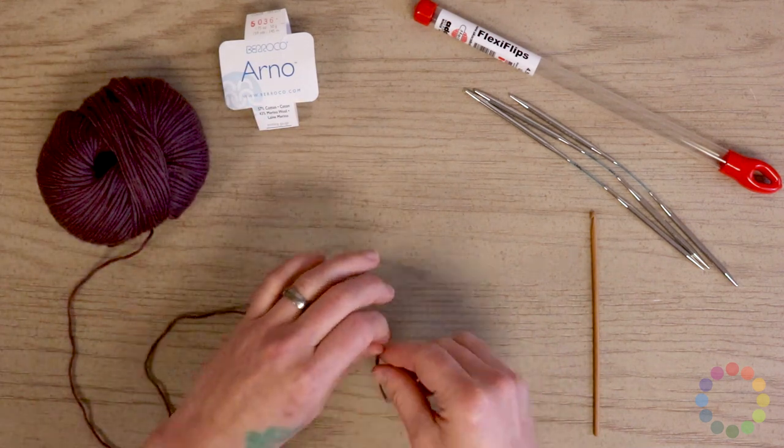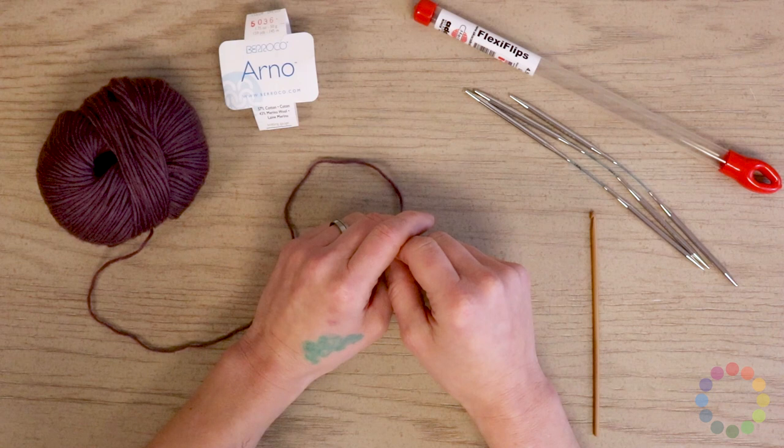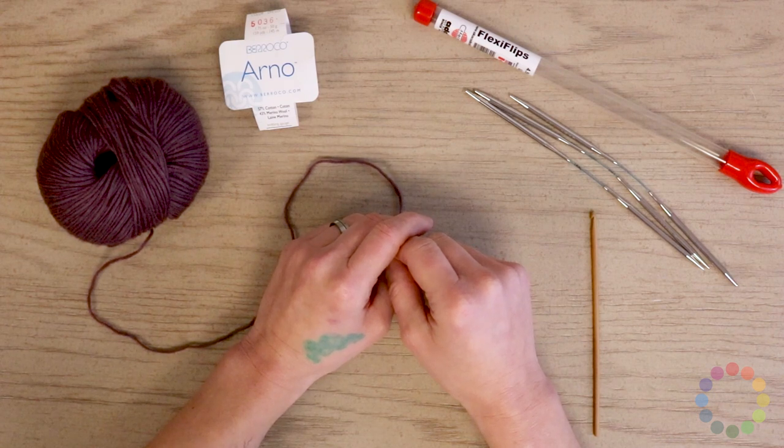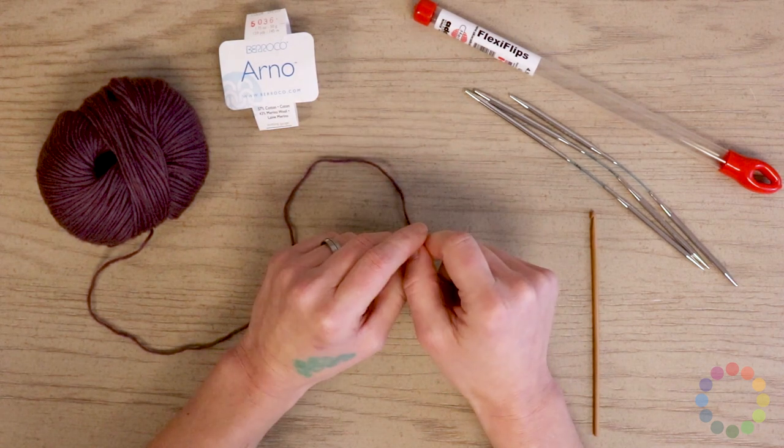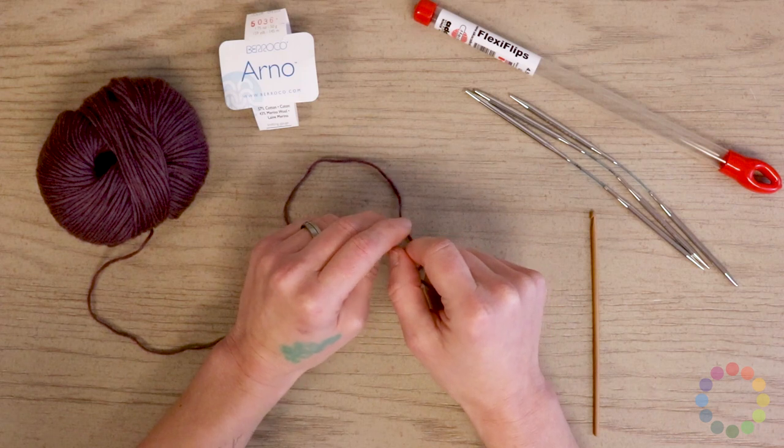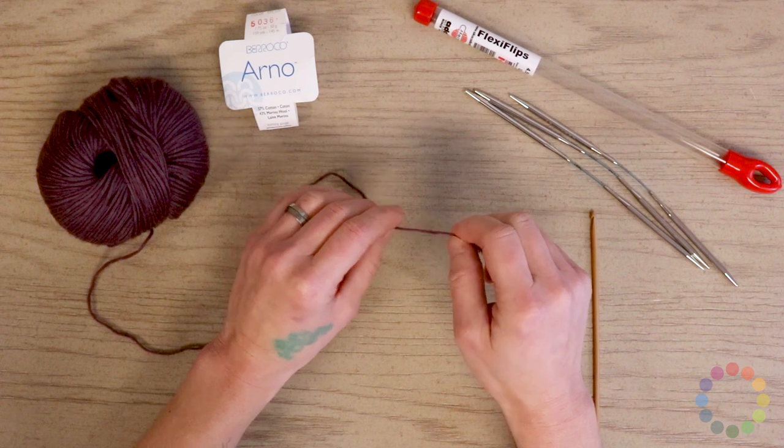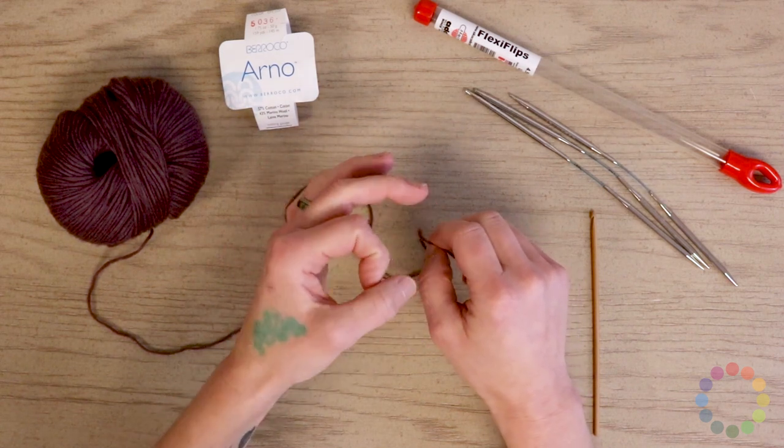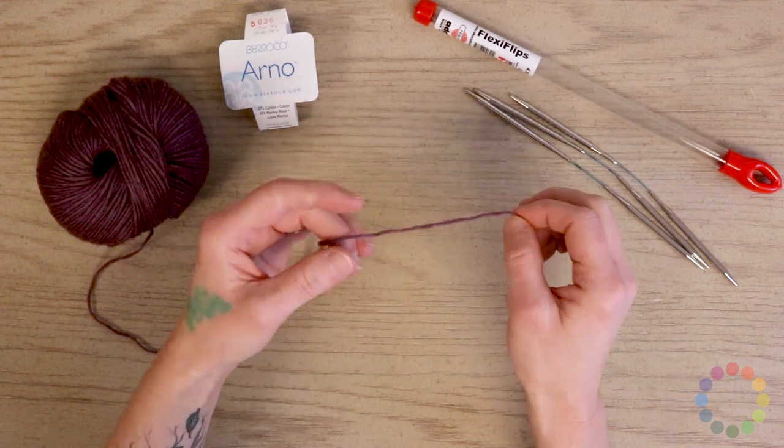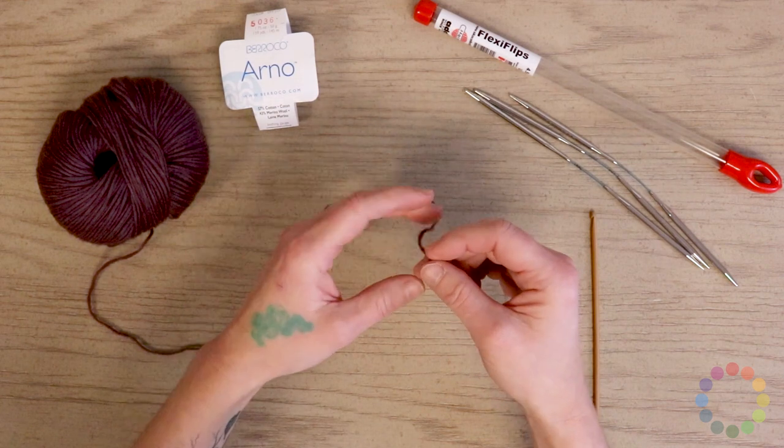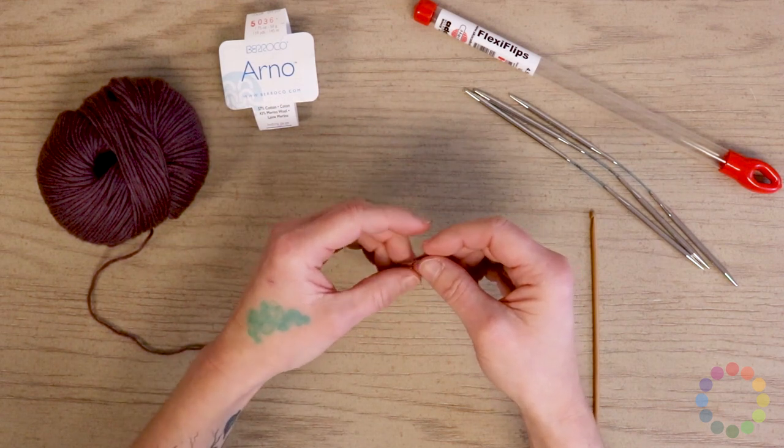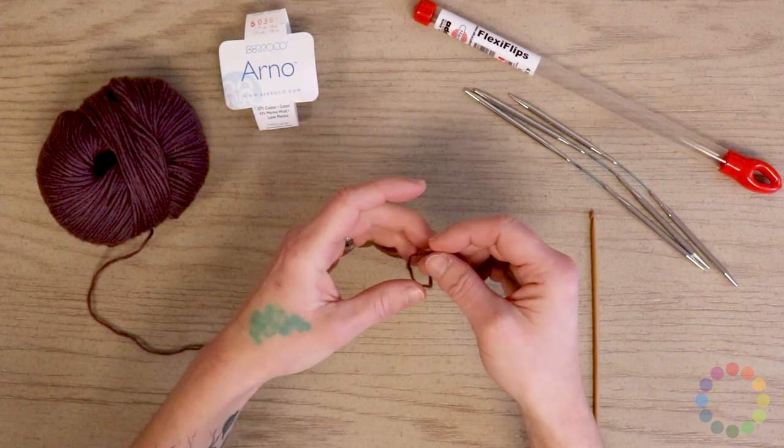So the pinhole cast on is a great method for any kind of piece of knitting that starts from the center out, so maybe a counterpane square, you could even use it for a pair of socks or a hat or a pie shawl, that kind of thing. And it's a way to start so that you don't have a hole in the center of your knitting. And if you've ever done the crochet magic ring or adjustable ring start in crochet, this is very similar.